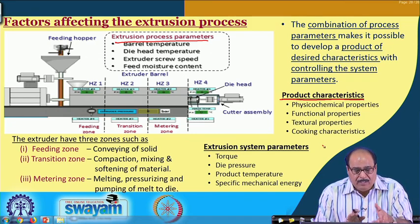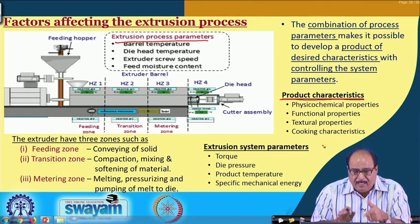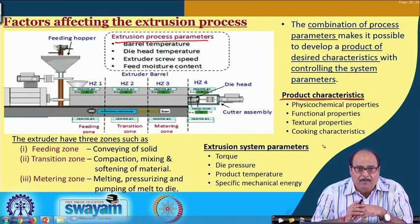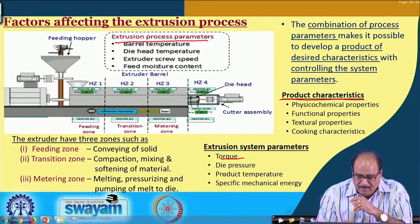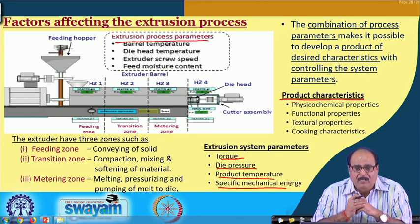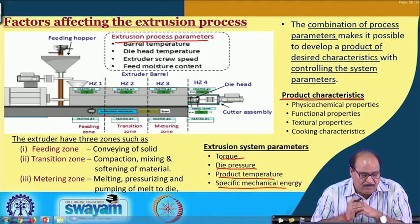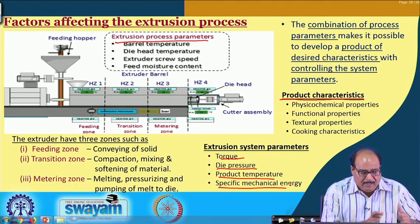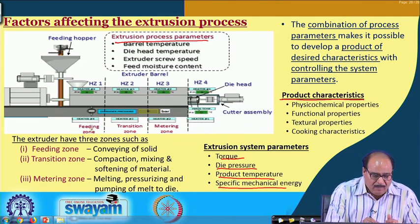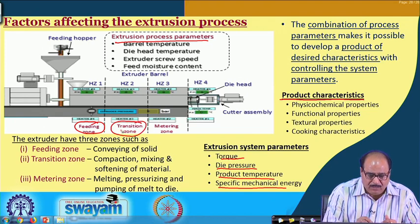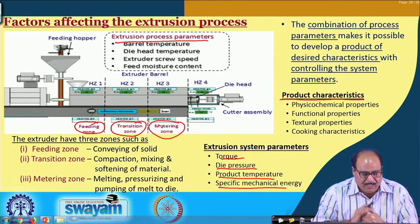The process parameters influence the system parameters. The extrusion system parameters are torque, die pressure, product temperature and specific mechanical energy. In the extruder there is the feeding zone, the transition zone and the metering zone.